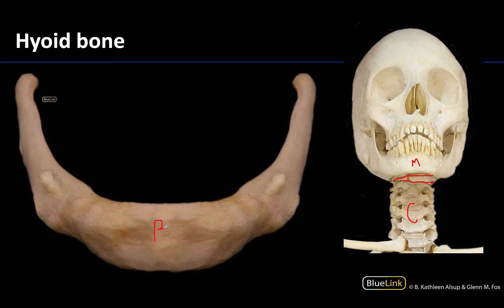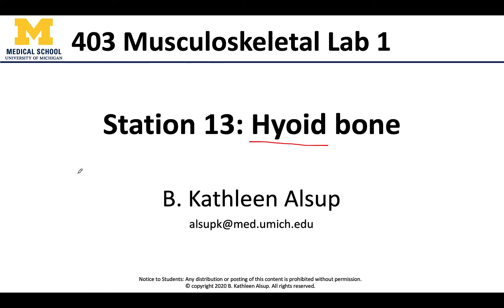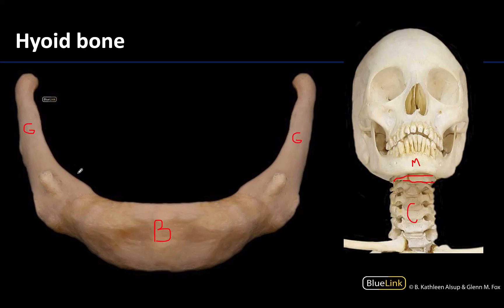You can see that it has a fairly distinct body with two different sets of horns. There will be the greater horns that project posterior-superiorly, and then right at the junction between the body and the greater horns will be the lesser horns.